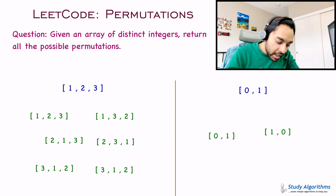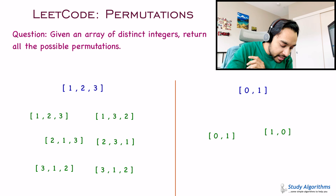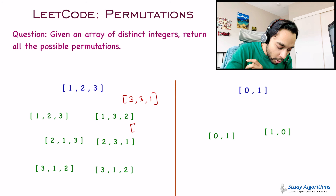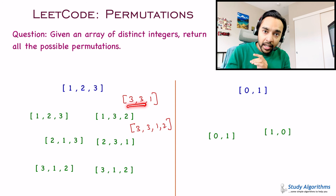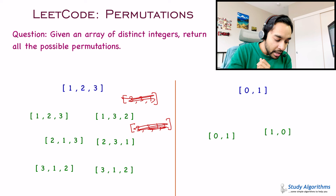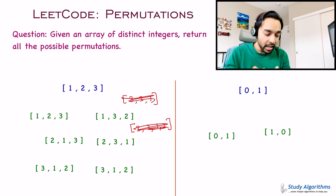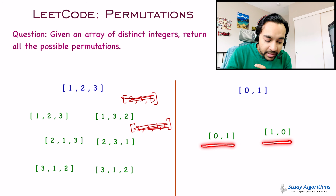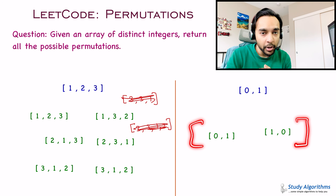Notice that you cannot have an arrangement where you are taking an element more than one time. For example, you cannot have an arrangement like three, three and one, or three, three, one and two. Both of these cases are invalid because you cannot duplicate the element and you cannot exceed the total length of the original array. Similarly, for another test case that only has two elements, you can arrange them in two different ways, and those should be your answer.